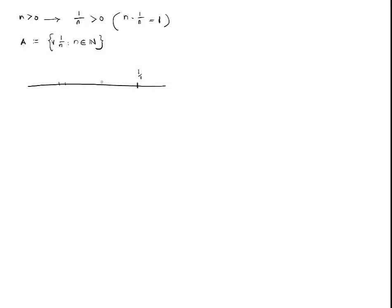So, visually we can see on a line that as the value of n increases, the size of 1 over n decreases, so much so that it approaches 0.